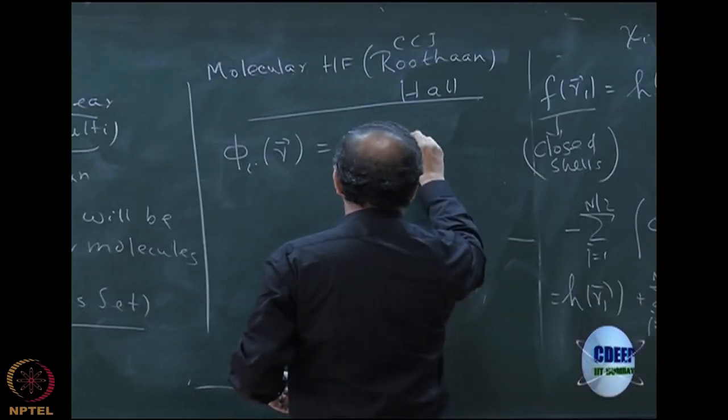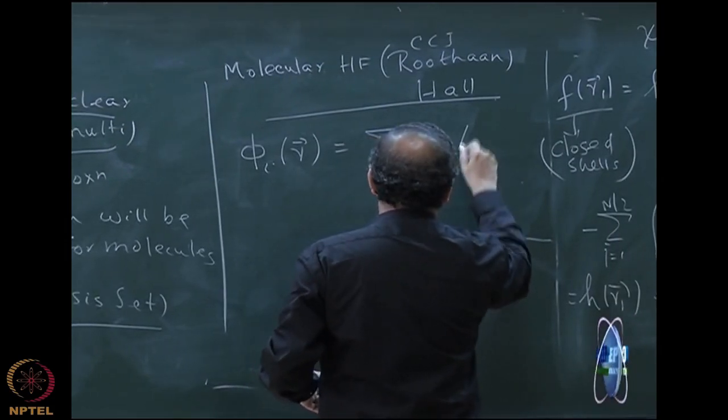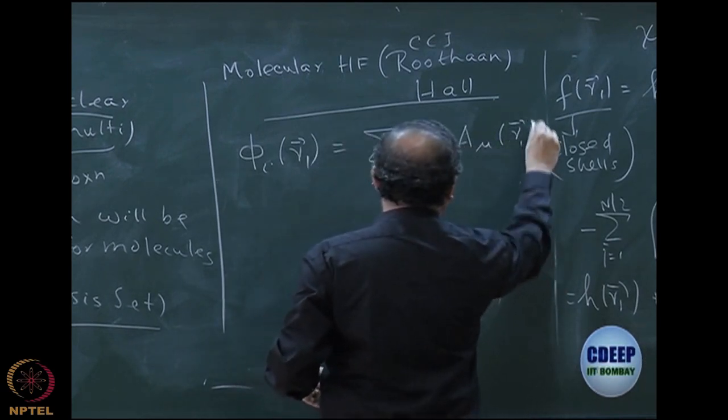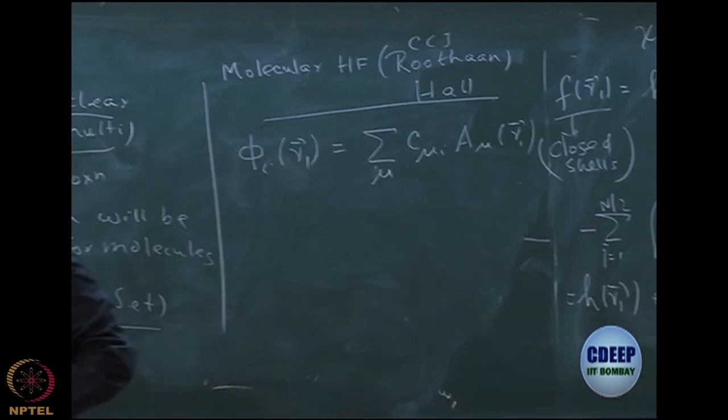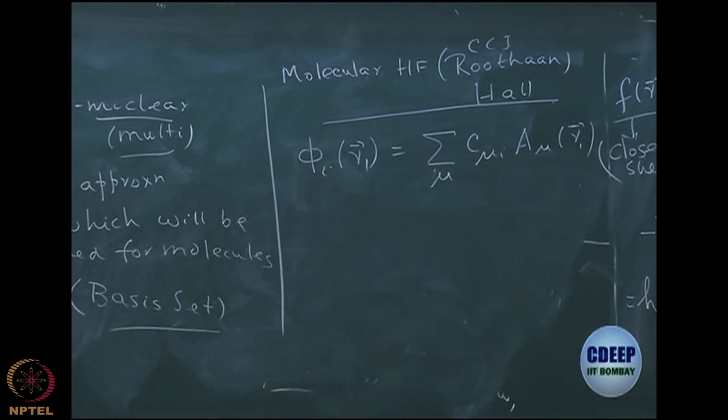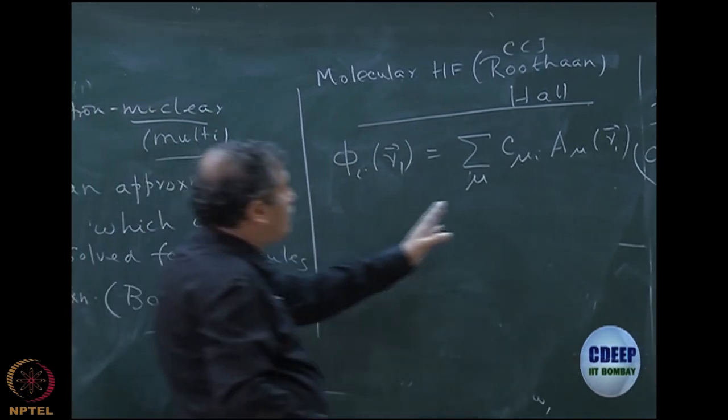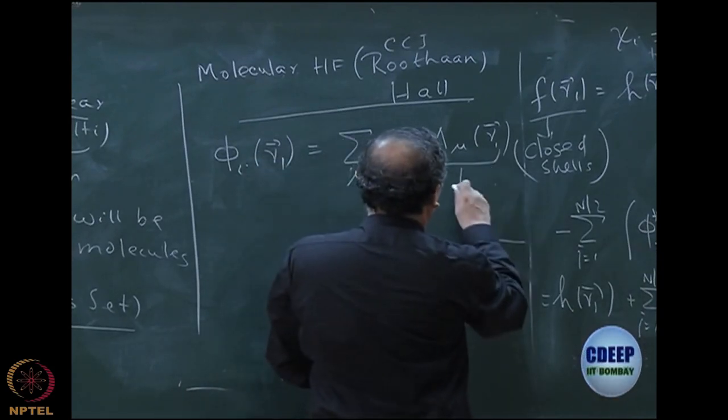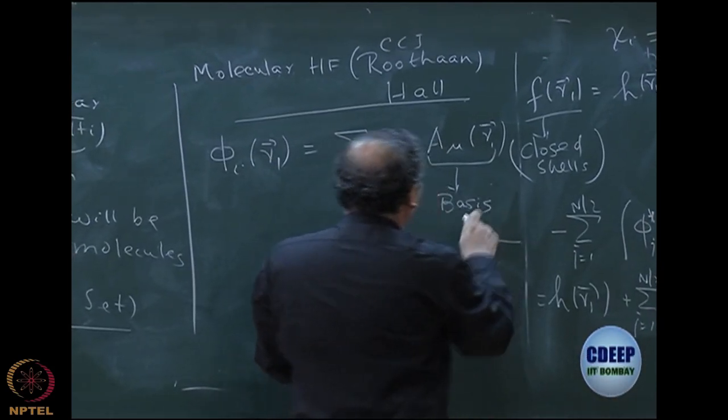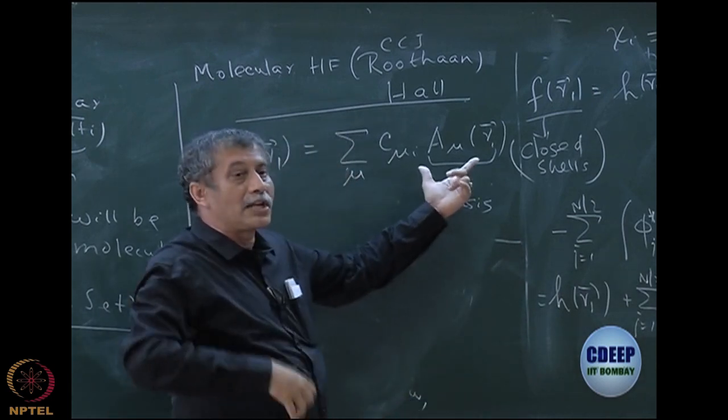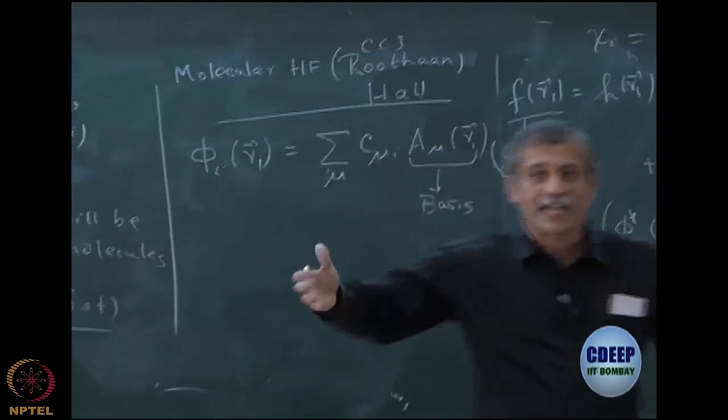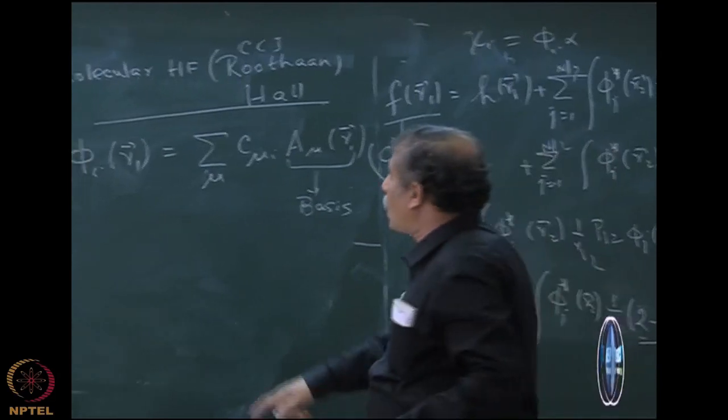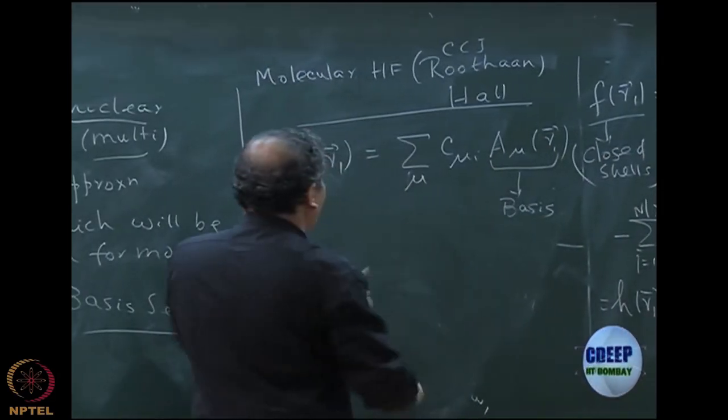I take a basis, let us say mu C mu i and some basis function A mu of r1. Every one electron function can be expanded as a linear combination of a basis, and I choose this as a basis A mu. I am deliberately writing A mu because for molecule this can eventually be atomic orbitals LCAO-MO. This is actually LCAO-MO if this basis is atomic, but the basis can be anything.